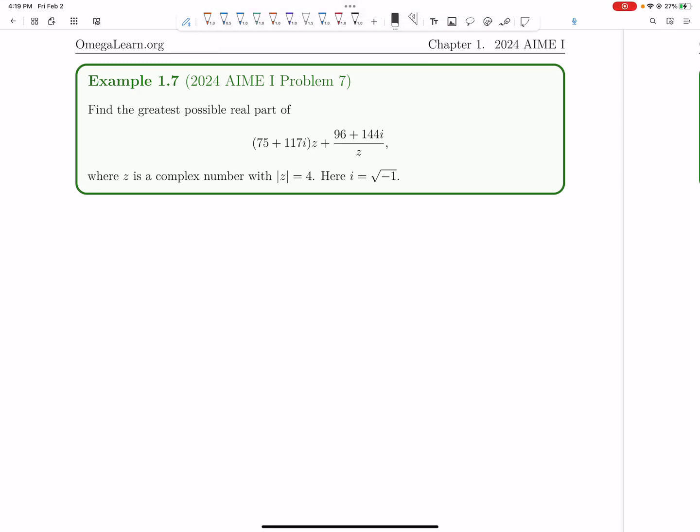Let's explore the solution to number 7 on the 2024 AIME. Find the greatest possible real part of this ginormous complex number with magnitude 4.